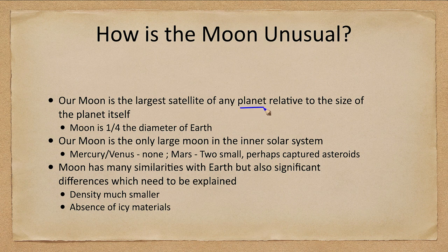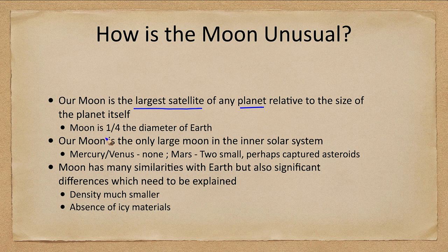Of any of the planets that have moons, our moon is the largest satellite relative to the size of the planet. Yes, there are several moons that are larger than our own, but they are orbiting much larger planets. The moon is one-fourth the diameter of Earth.